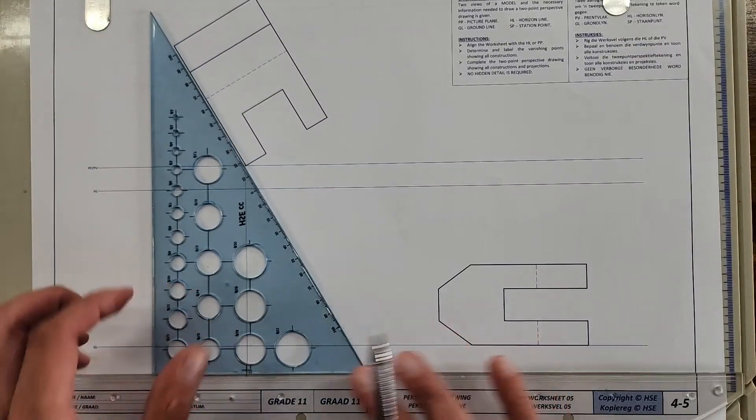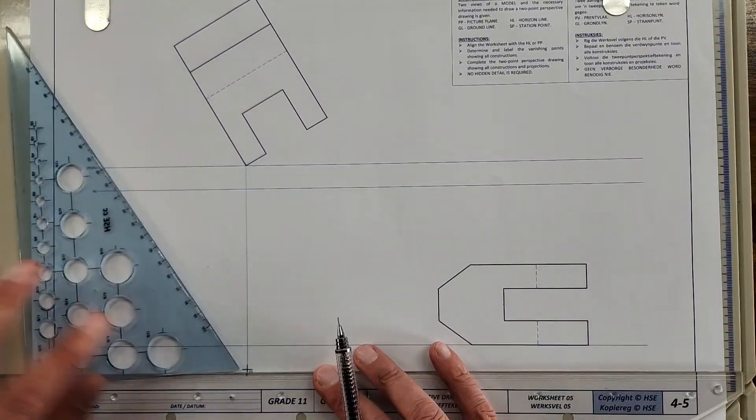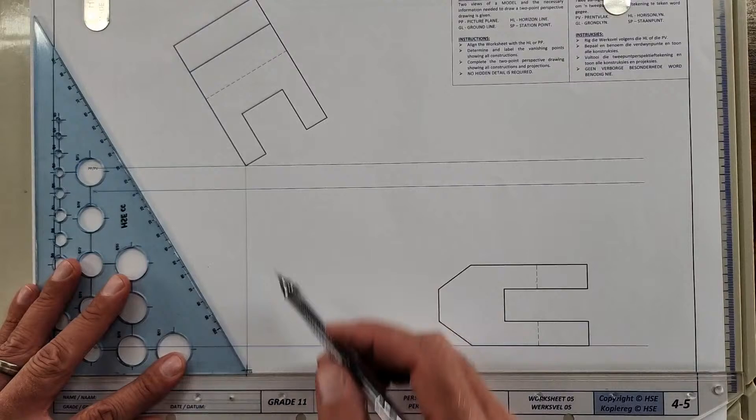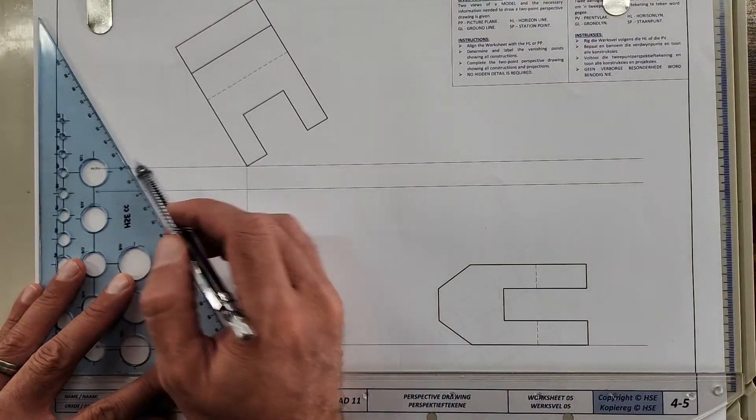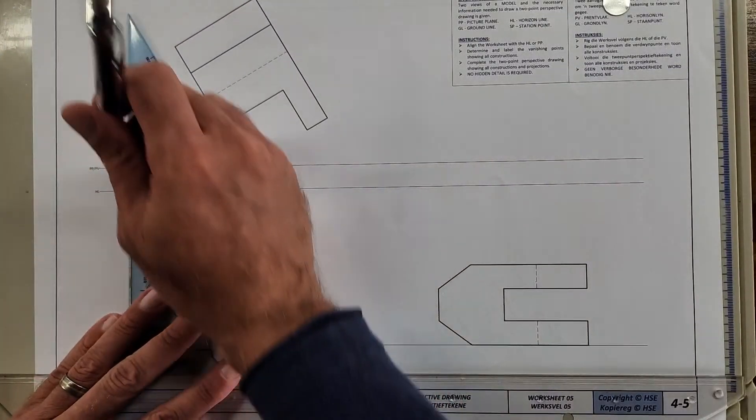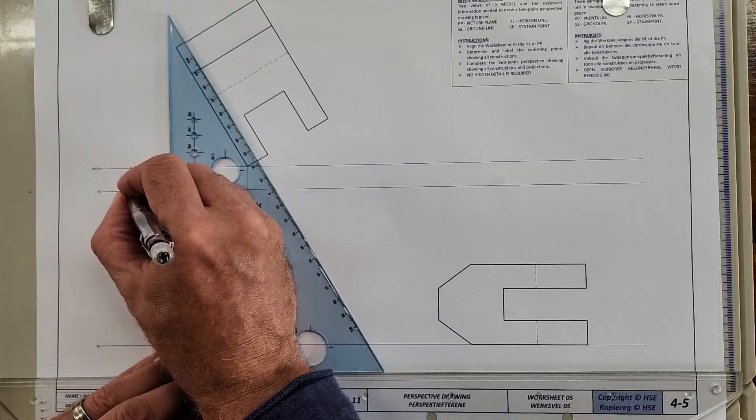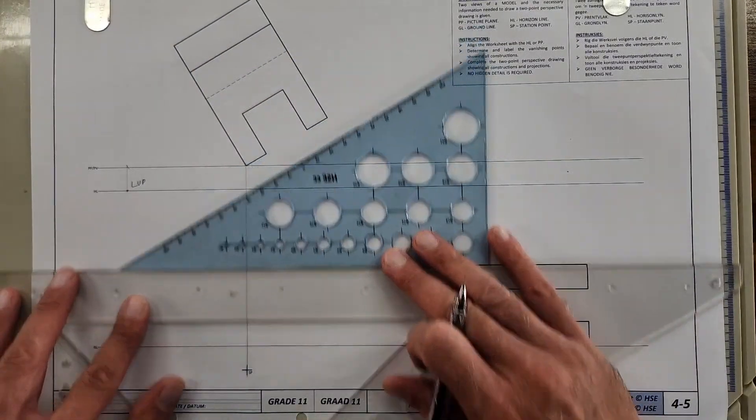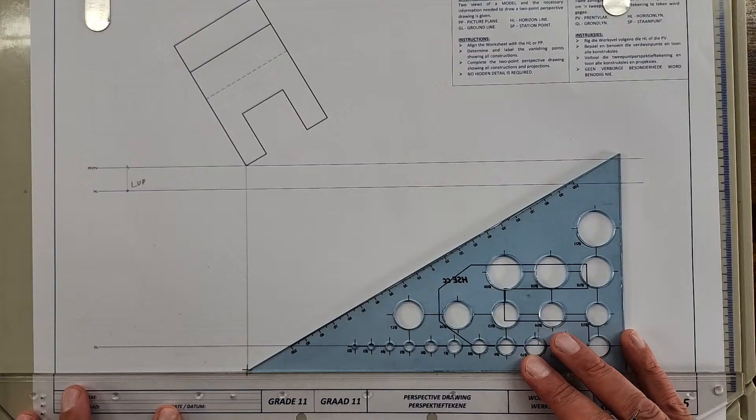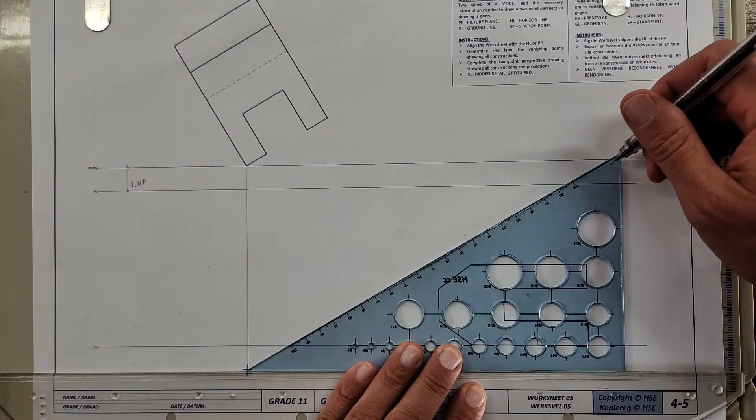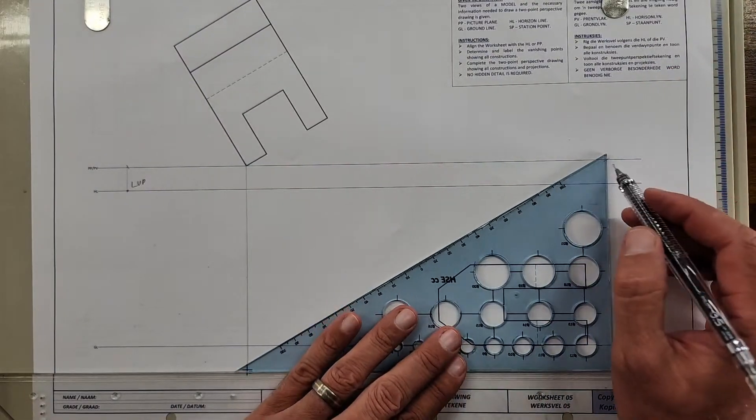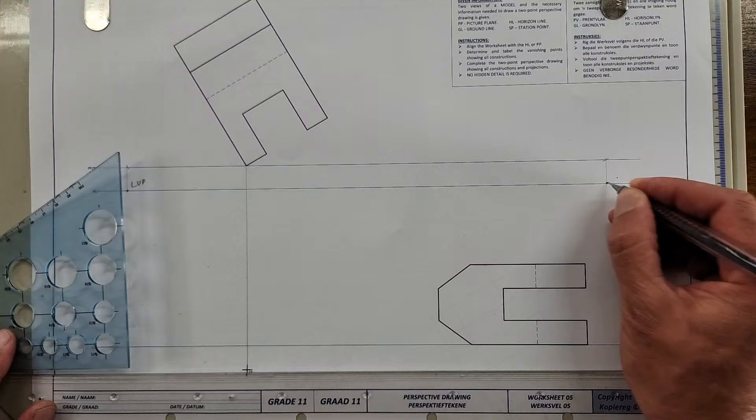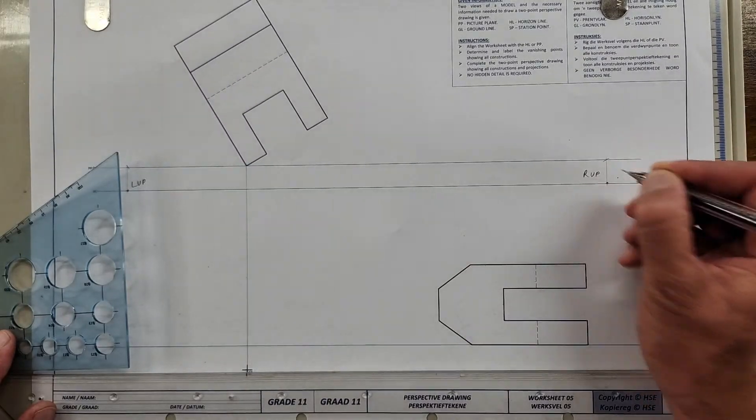Once you familiarize yourself with that, you have to determine the vanishing points from the SP. This one is at 60 degrees up to the picture plane, down, make a dot - left vanishing point. That one is at 30 degrees from the SP up to the picture plane and down here, clear dot - right vanishing point.